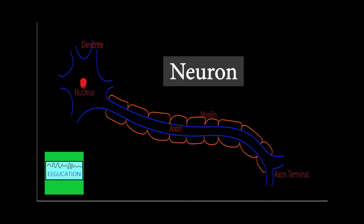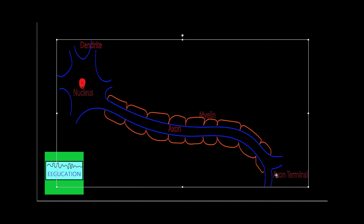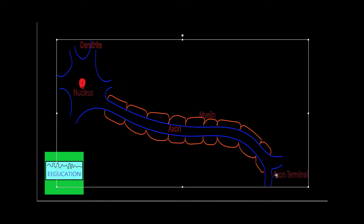So what is a neuron? Neurons are the building blocks of the nervous system. This part of the neuron is called the nucleus, this is the axon, and then you can see the axon terminal. The human brain is made up of approximately 60 billion neurons. In a resting state, the inside of the neuron is relatively more negative than the outside. Neurons communicate with each other through electrochemical signals.